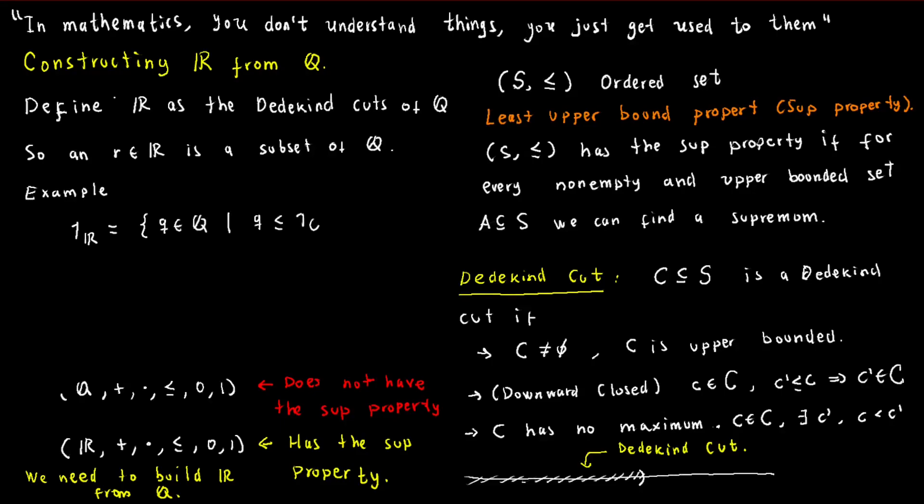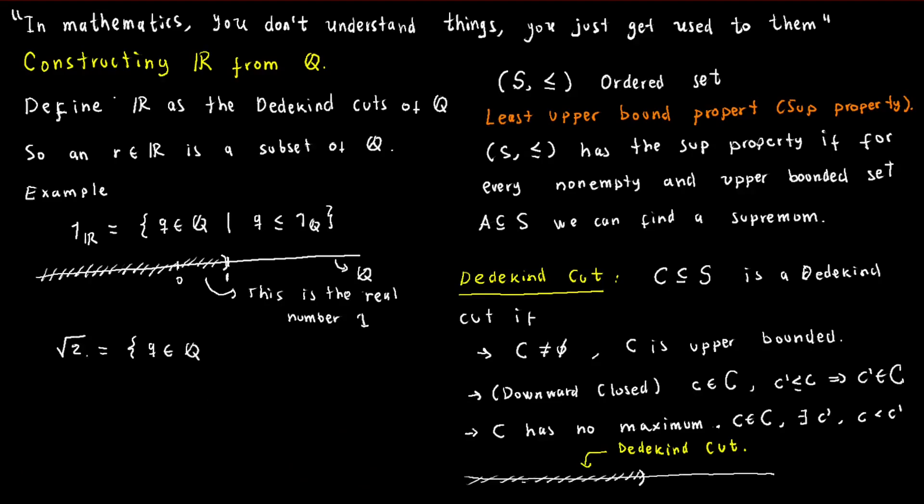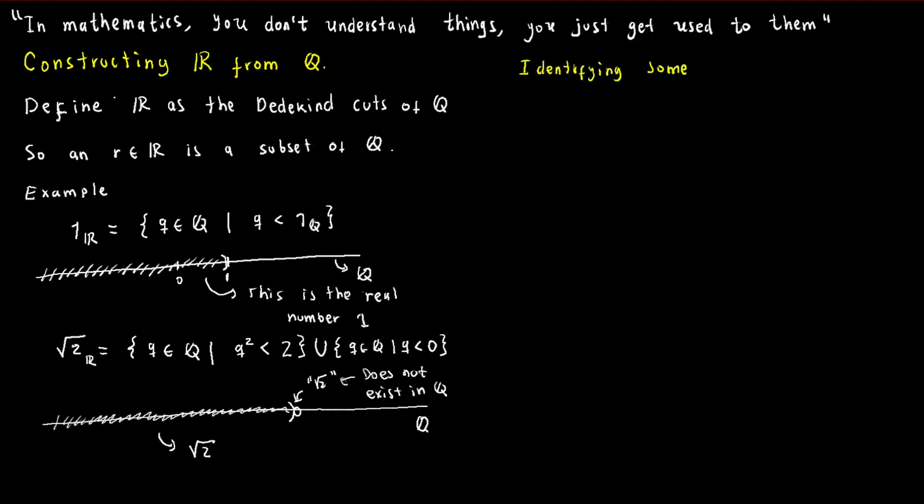To illustrate, the real number 1 corresponds to the set of all rational numbers that are less than the rational number 1. Likewise, the real number square root 2 corresponds to the set of negative rational numbers in addition to all positive rational numbers whose square is less than 2.